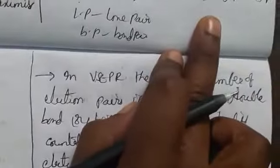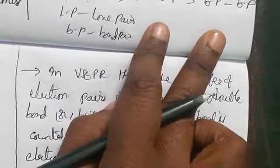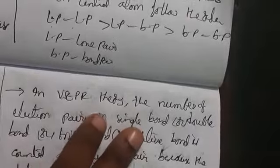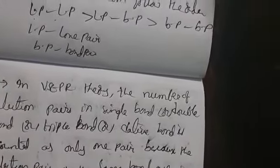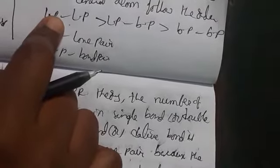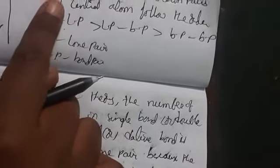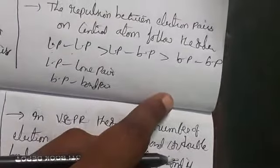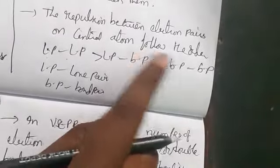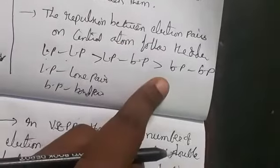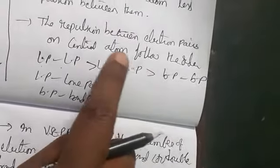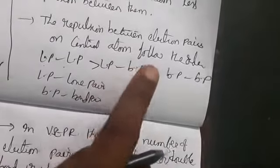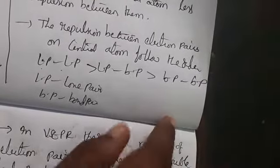The important difference between lone pairs and bond pairs: lone pairs are localized on the central atom, while each bond pair is shared between two atoms. The lone pair electrons in a molecule occupy more space compared to bond pair electrons. That is why repulsion is greatest for lone pair–lone pair, then lone pair–bond pair, and least for bond pair–bond pair.